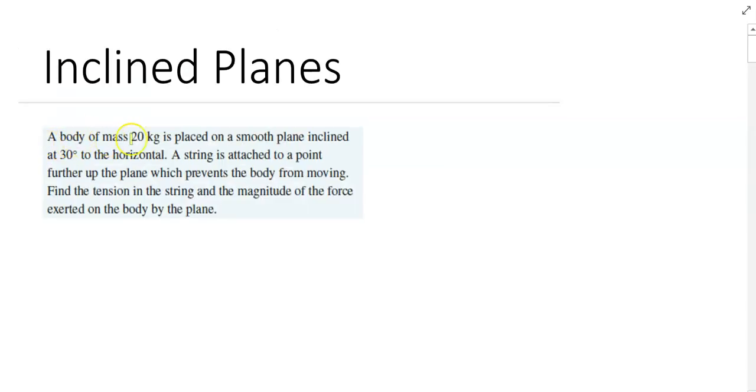A body of mass 20 kilograms is placed on a smooth plane inclined at 30 degrees to the horizontal. So I have the floor. I have a smooth plane inclined at 30 degrees to the horizontal. That's 30 degrees there.